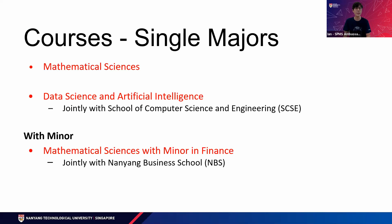When you join us for SPMS under Mathematical Sciences, you will be offered a single major or double major. For single majors, we have Mathematical Sciences as well as Data Sciences and Artificial Intelligence. This Data Science and Artificial Intelligence topic has been on the rise for the past few years, and I urge you to take a look if you are interested. We also have a minor in Finance, where students will learn about financial management as well as investments.